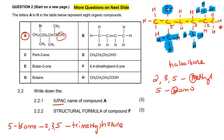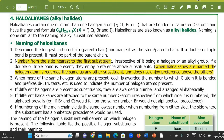Even on the memo they made the classic mistake of naming from the side closest to the functional group. That is correct for alcohols, alkenes, alkynes, and other functional group molecules — but not haloalkanes. I'll show you a textbook that confirms this: it says you must number from the side nearest to the first substituent irrespective of whether it's a halogen or alkyl group. When haloalkanes are named, the halogen atom is regarded the same as any other substituent and does not enjoy preference above the others. A lot of teachers don't know this.